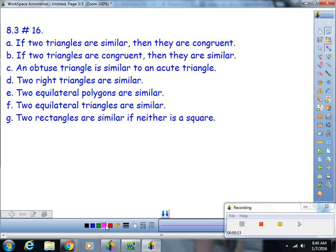This is 8.3 number 16. Part A: If two triangles are similar, then they are congruent. Well, I can think of a way that could be true and a way that could be false, so that must be sometimes true.